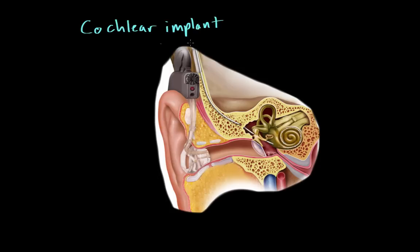Let's look at the different components of the cochlear implant. The implanted part, highlighted here, is known as the receiver. From the receiver extends a long tube that goes all the way into the cochlea and curves around — this tube is known as the stimulator.